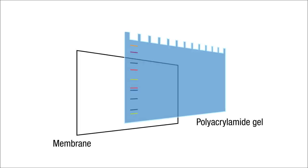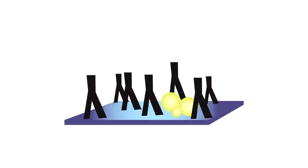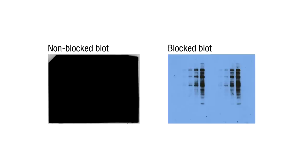Nitrocellulose and PVDF membranes have a high protein binding affinity, which is essential for successful Western blot analysis. The blocking step ensures that the antibody binds specifically to the antigen rather than non-specifically to the membrane surface, which can result in high background signal that prevents detection of your protein of interest.